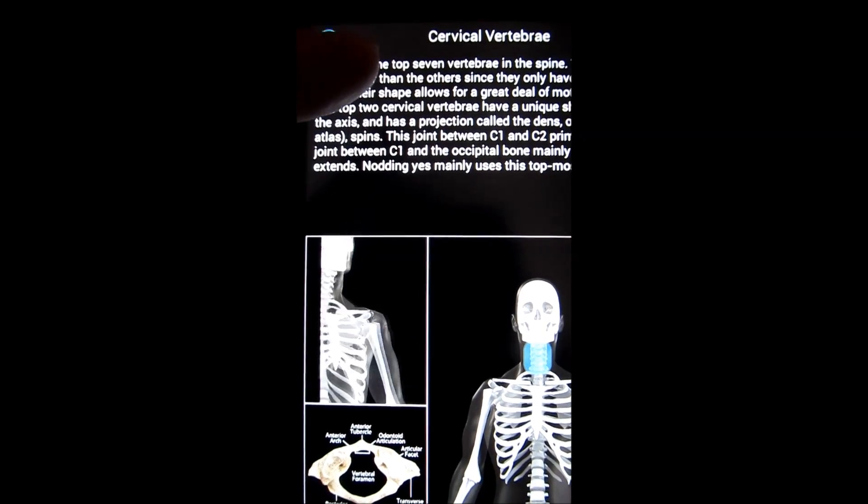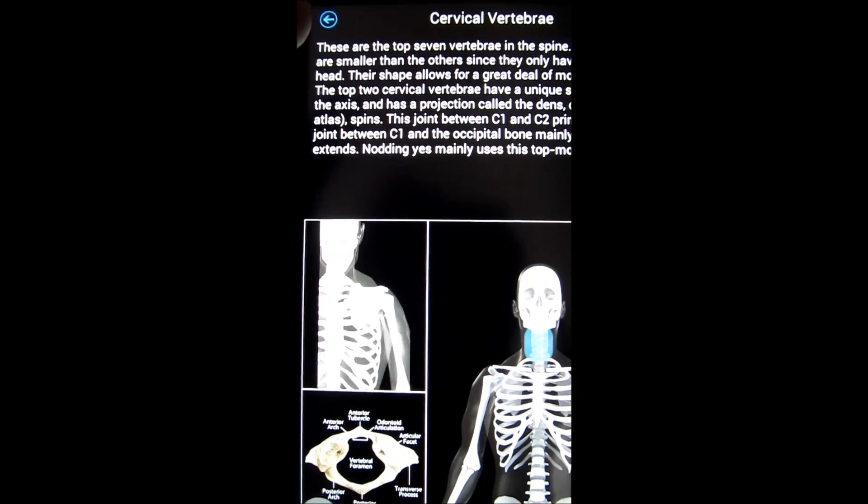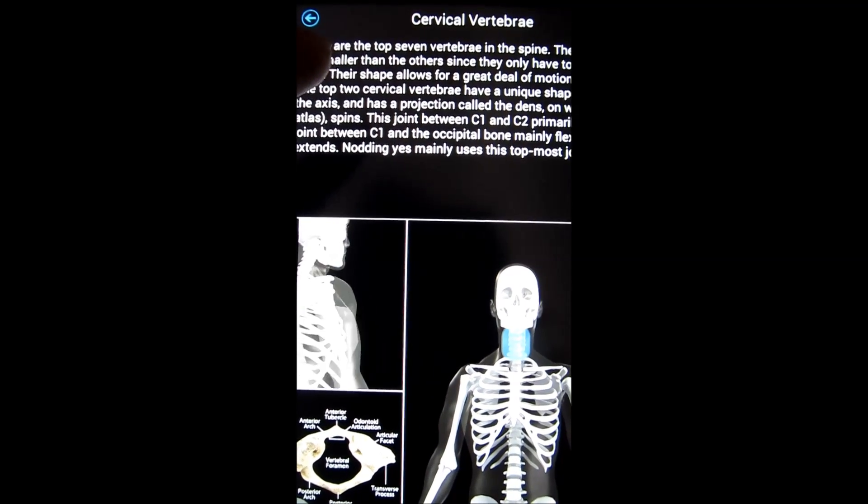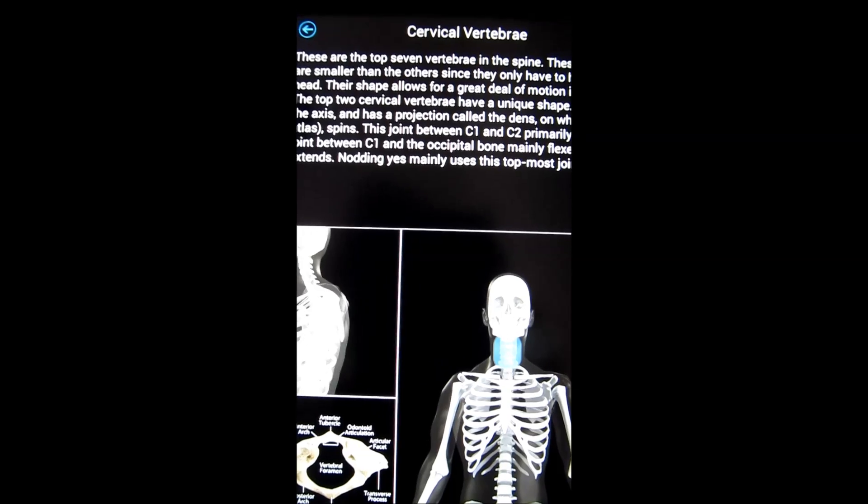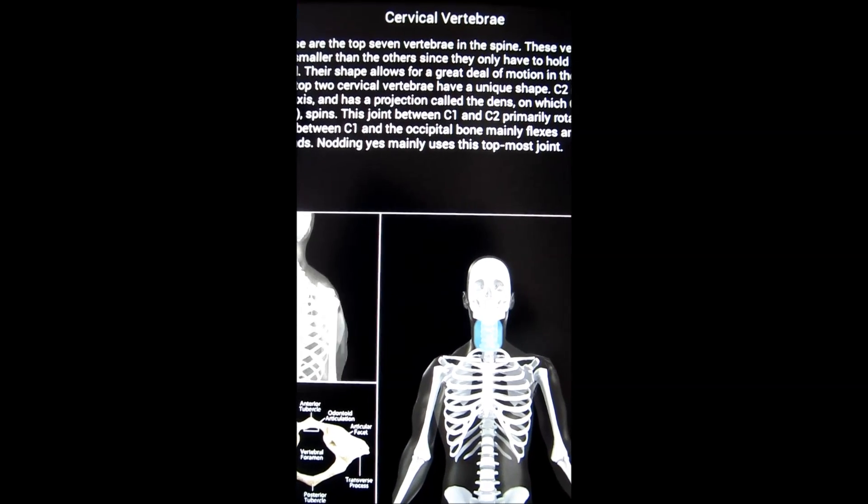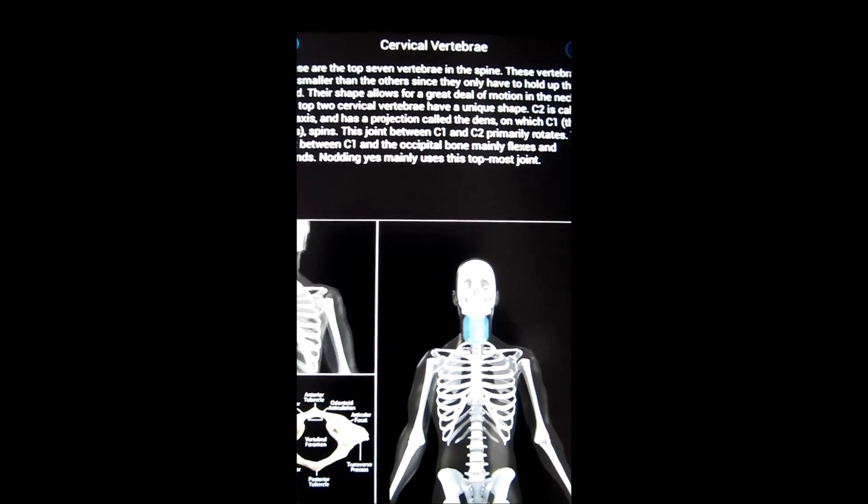These are the top 7 vertebrae in the spine. These vertebrae are smaller than the others since they only have to hold up the head. Well that's true. Their shape allows for a great deal of motion in the neck. The top 2 cervical vertebrae have a unique shape. C2 is called the axis. The next one is called the atlas. Pretty neat stuff here.